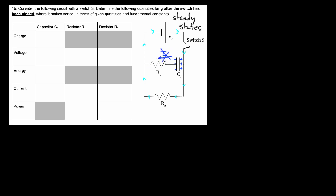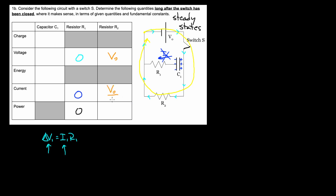In the steady state, R1 has zero current through it. If there's zero current through R1, the voltage across R1 is also zero, and therefore no power. R2, however, is still connected straight to the battery — nothing changes there. R2 still gets the full voltage V₀. The current through R2 is V₀ over R2 by Ohm's Law.